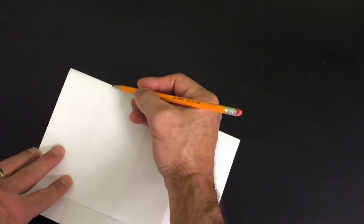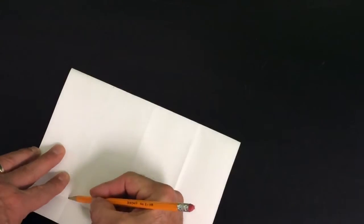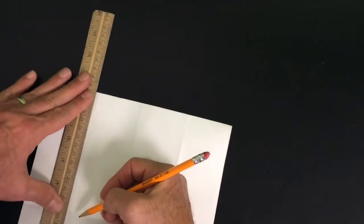The last part of this foldable is to take these lines that you made, and if you want to mark it where it is to make it easier to see, and then you make this line.